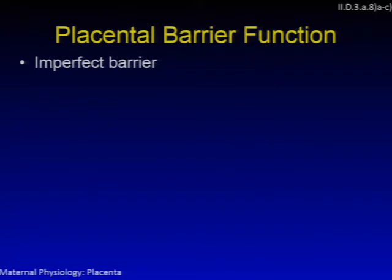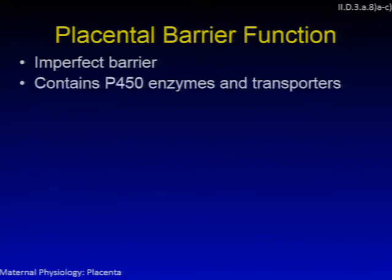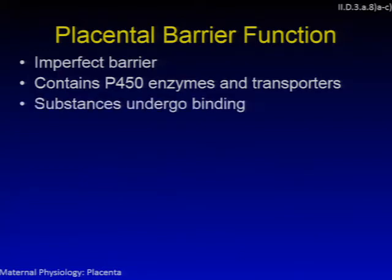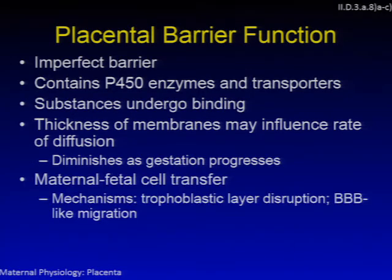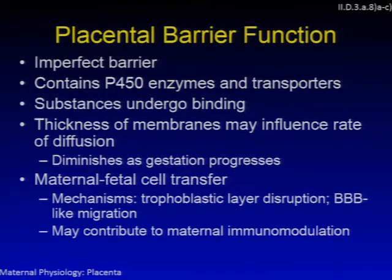The placenta is an imperfect barrier — it allows many substances to cross from maternal to fetal circulation and vice versa. A vast array of cytochrome P450 enzymes and transporters are found within the placenta, some inducible and some constitutive. A number of substances undergo specific or nonspecific binding within placental tissues, minimizing fetal exposure. Placental membrane thickness diminishes as gestation progresses, influencing diffusion rate. Fetal cells have been detected in maternal circulation by disruption of the trophoblastic layer or active transmigration. These fetal cells can exert maternal immunosuppressive effects, which may explain why pregnant women sometimes develop or have worsening of autoimmune diseases such as thyroiditis, lupus, and asthma.